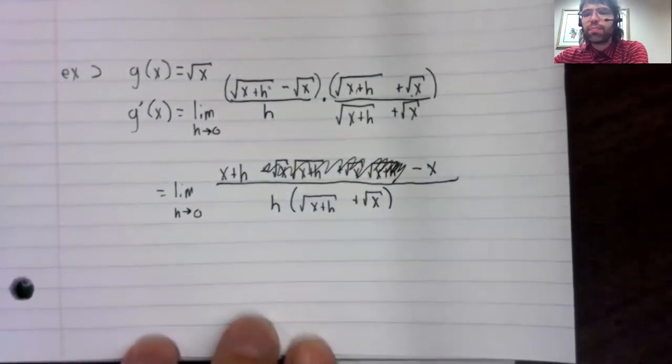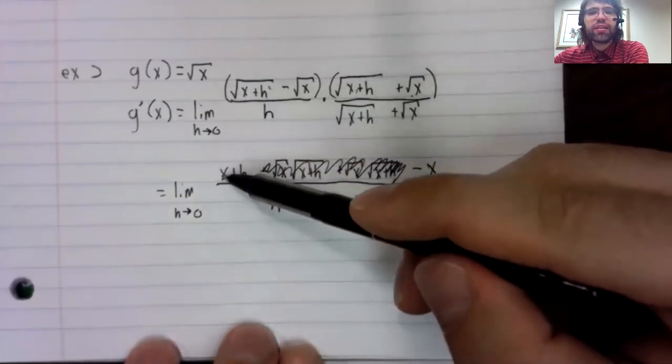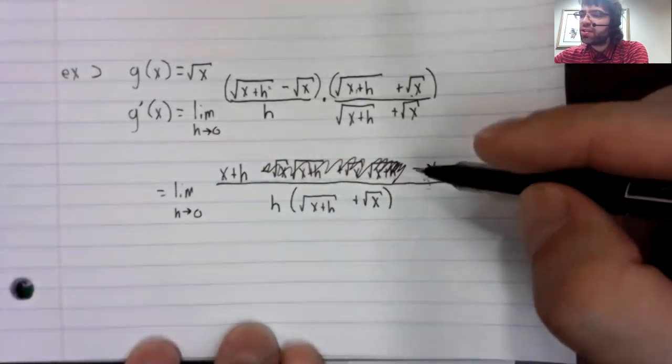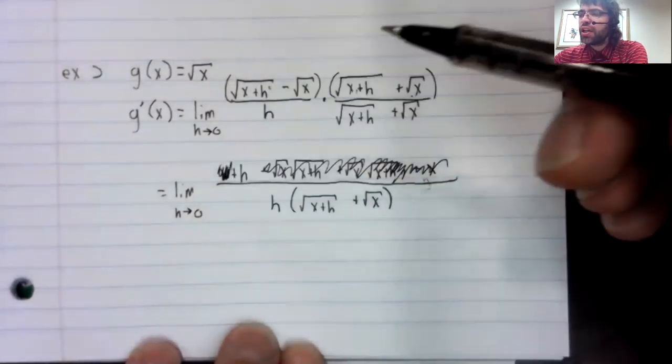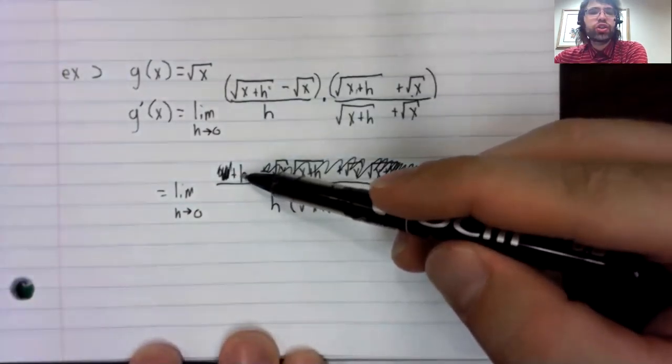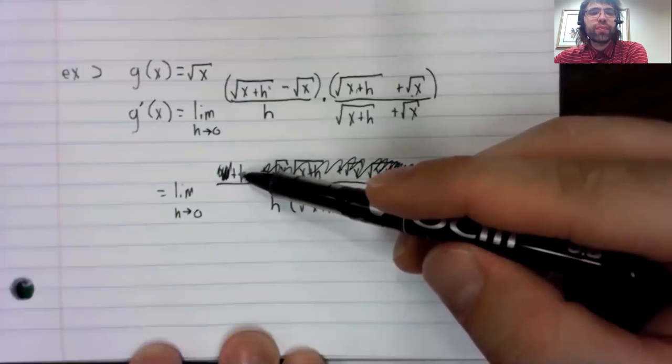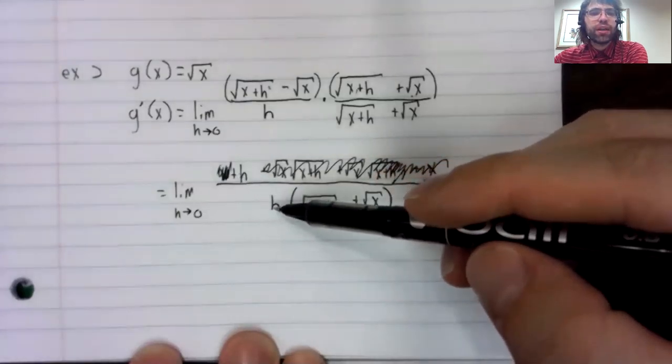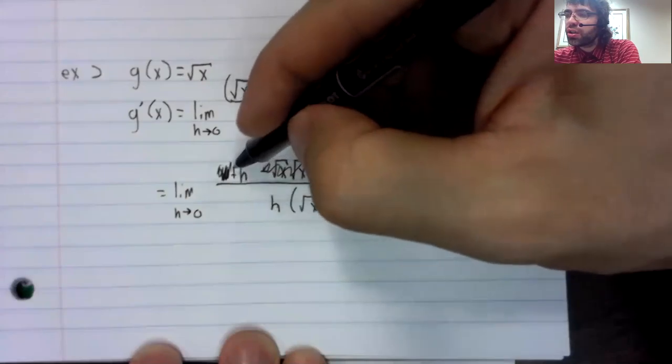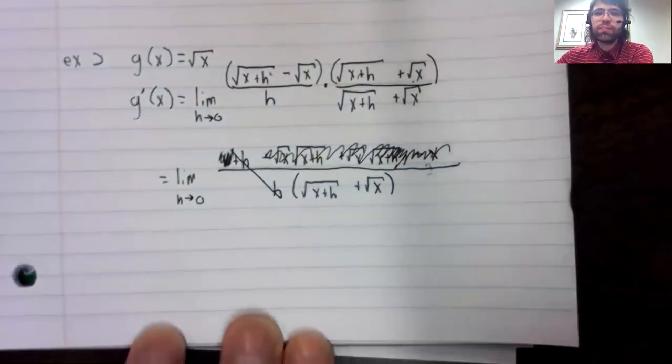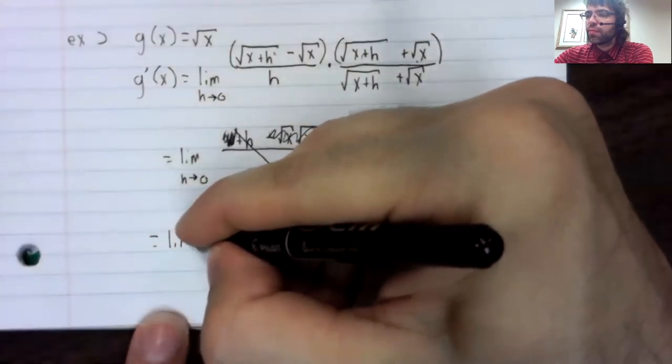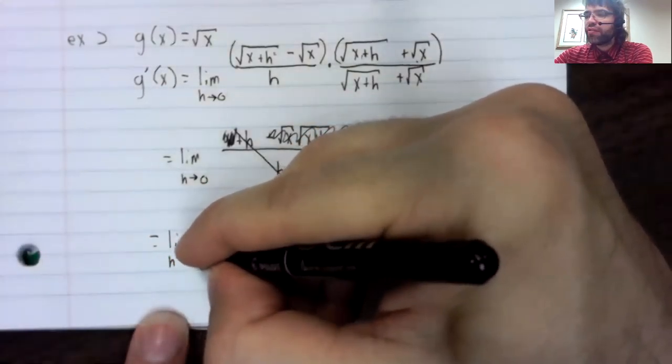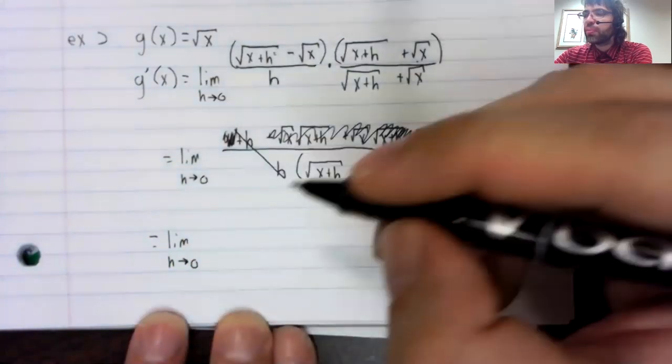Now what happens? Now the x and the negative x cancel. And we've just got an h up here. This h and this h cancel.